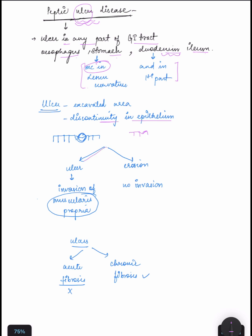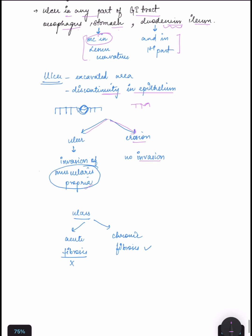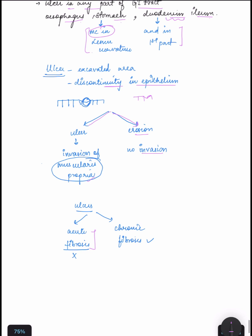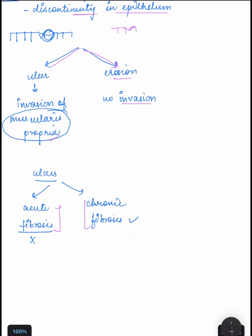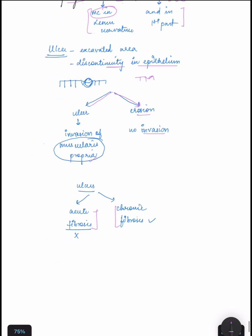In ulcer and erosion: ulcer has invasion of muscularis propria, erosion has no invasion. Ulcer can be divided into acute and chronic. Thank you so much.